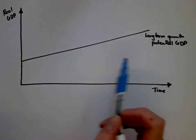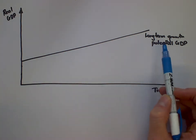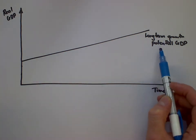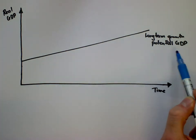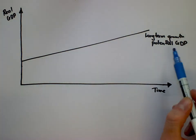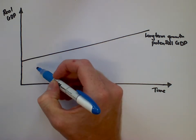One of the big ideas is that over time we can show that countries go towards this idea of long-term growth that follows a trend, and we call this idea potential GDP.